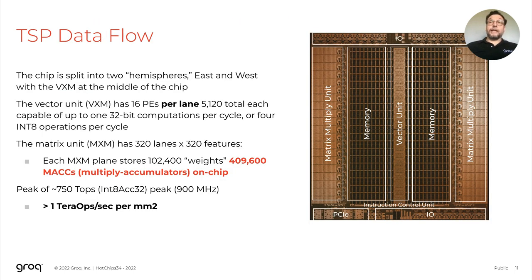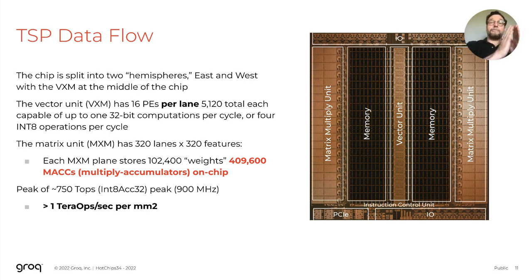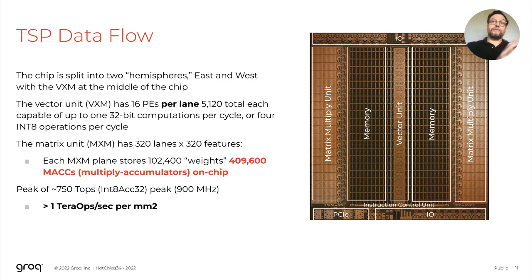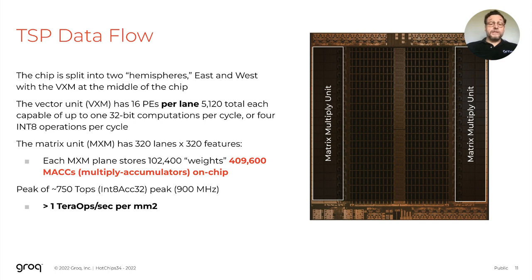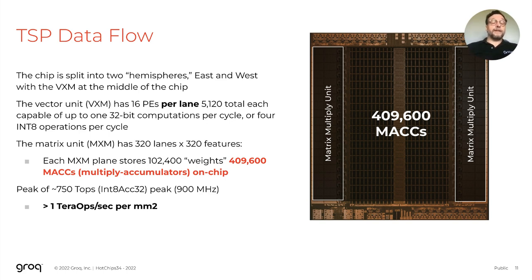If we look at the chip architecture, we can see that the chip is organized in a spatial orientation, where functional units are laid out next to each other and collaborate by passing operands and results between each other in an efficient way called chaining — chaining the output of one functional unit to the inputs of an adjacent downstream functional unit. On the chip, there's a large MXM module, which is our workhorse matrix unit. It contains storage for 409,600 weights, providing tremendous compute density with over one tera-op per square millimeter of silicon area.